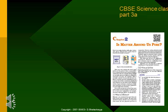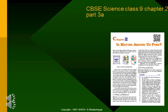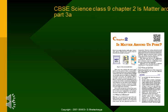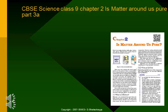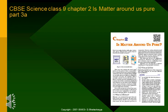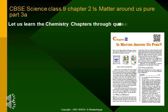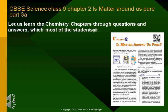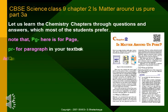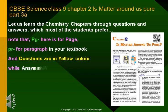CBSE Science, Class 9, Chapter 2: Is Matter Around Us Pure? Let us learn the chemistry chapters through questions and answers, which most of the students prefer. Note that PG here is for page, PR for paragraph in your textbook, and questions are in yellow color while answers are in white color.